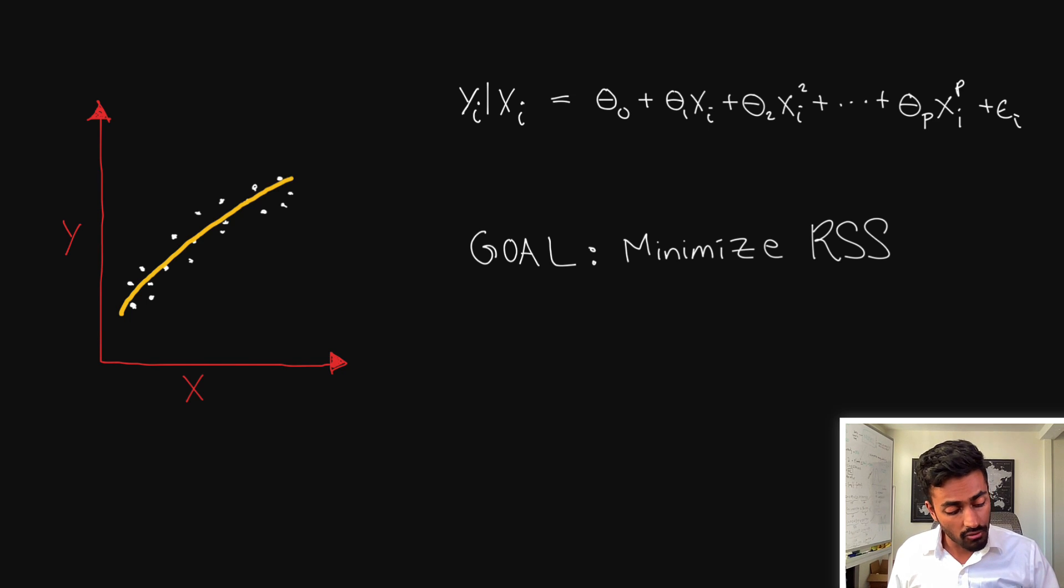However what we might actually get is probably something that looks like this. Why do we get the green line instead is because well our goal is just to minimize the residual sum of squares and this green line actually has a smaller residual sum of squares than the yellow line which we wanted. But the problem with the green line is that it could potentially be overfitting the data and so it doesn't generalize too well.